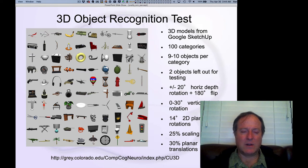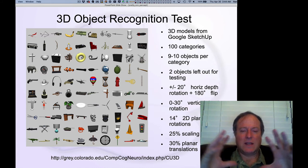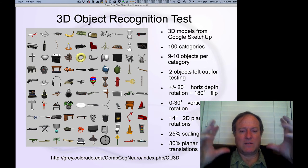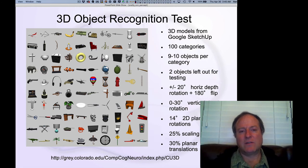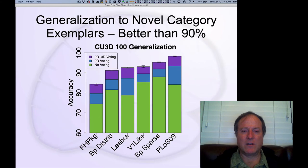Some of these objects had much different shapes — the cars and airplanes were quite different actually. We had quite a bit of variation in how we presented these to the network: moving them, sizing them, rotating them, different lighting conditions. We were able to control exactly how much variability each object was experienced with, which was critical for really understanding how robust the model was across these different levels of variability.